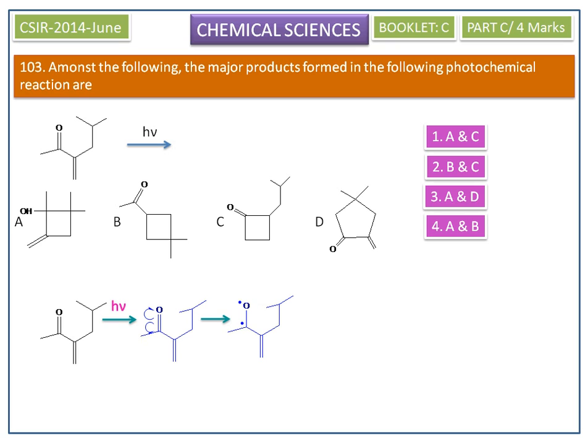Now we have to check whether it is cleaved by Norrish type 1 or 2. For this, it is compulsory to check the gamma hydrogen. This is alpha carbon, this is beta carbon, this is gamma carbon. This hydrogen is called gamma hydrogen. It is confirmed this molecule is cleaved by Norrish type 2.